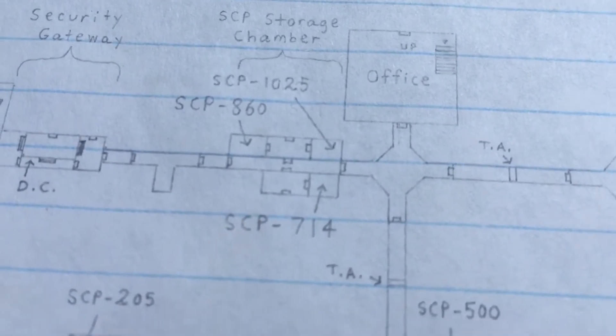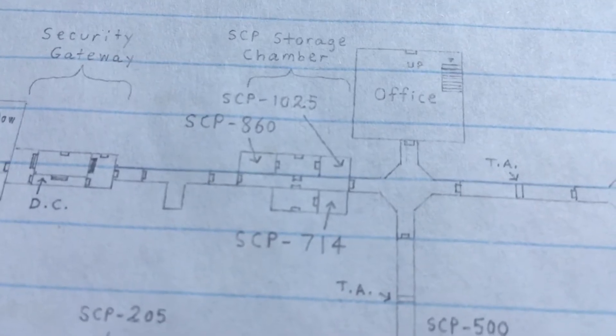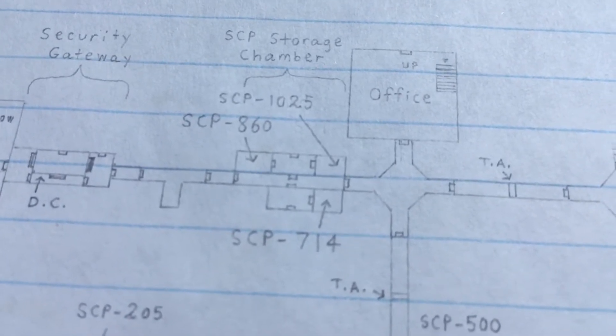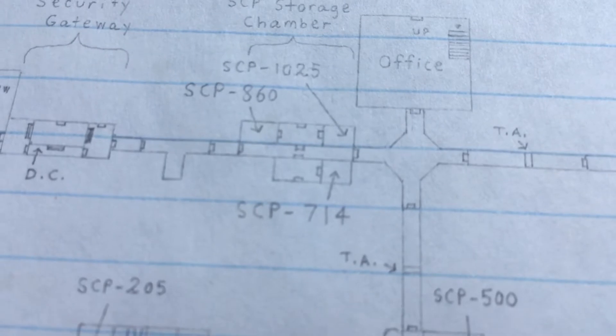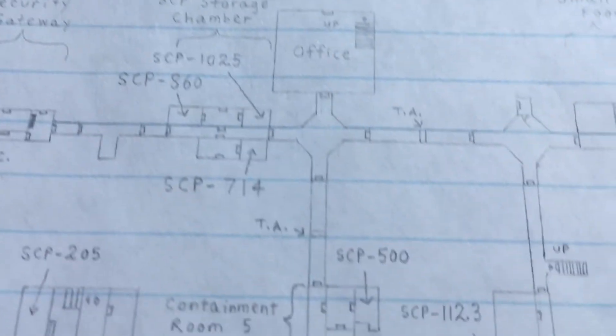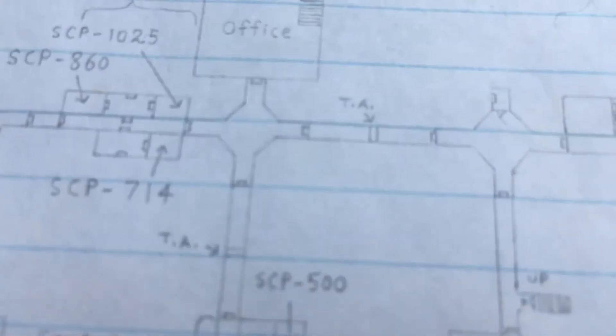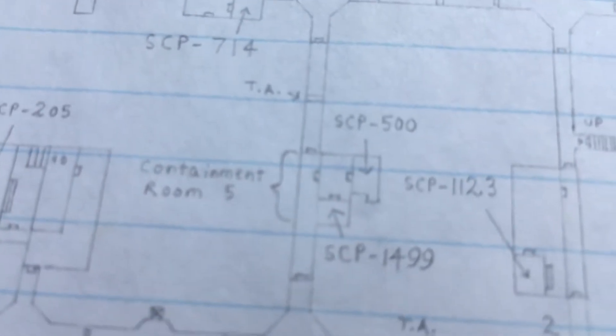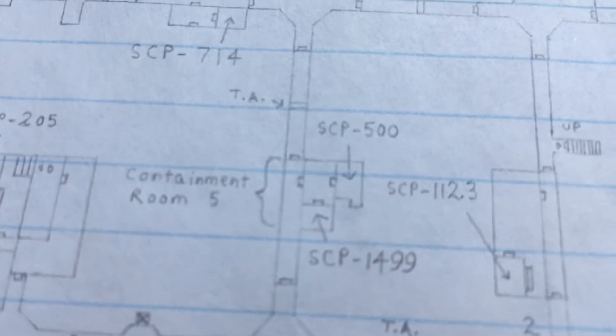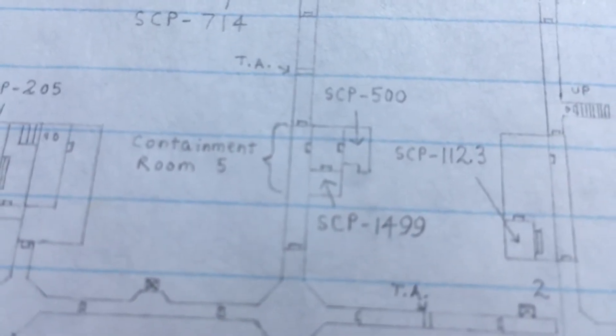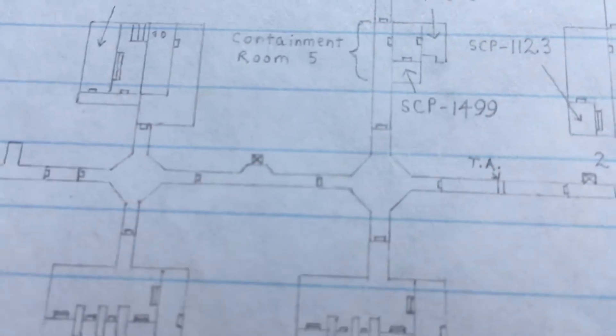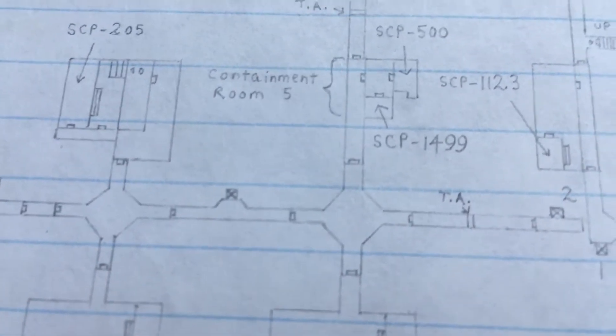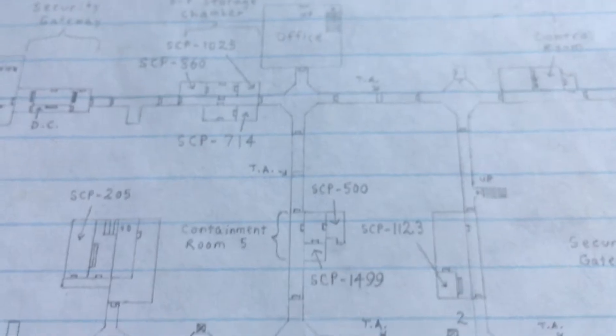SCP storage chamber. There's three - there's 860, 1025, and 714. You have tesla gates, containment room 5, SCP-500, and SCP-1499. You got intersections, four-way and three-way intersections.